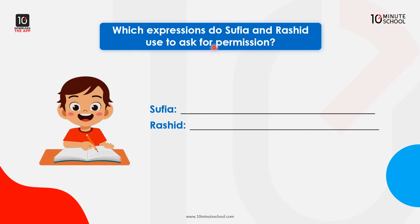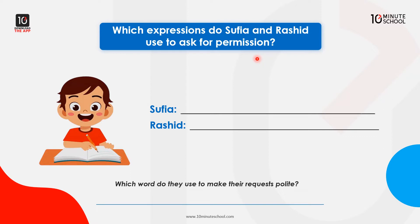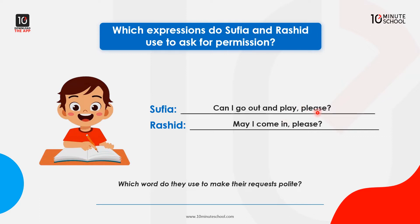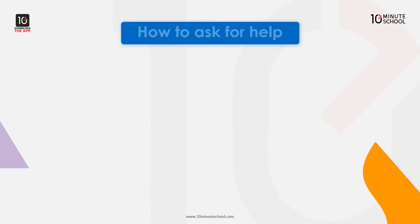Which expressions do Sophia and Roshid use to ask for permission? Which word do they use to make their requests polite? Sophia asks: Can I go out and play please? Roshid asks: May I come in please? So the expressions to make a polite request are: can I, may I, and please.